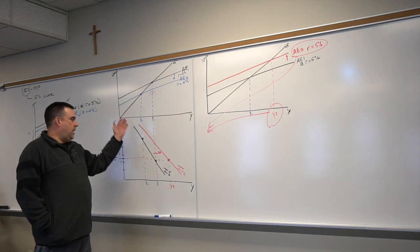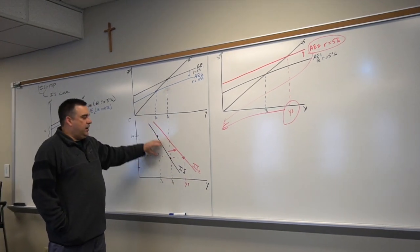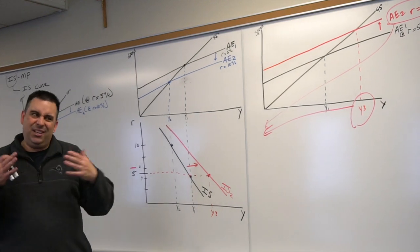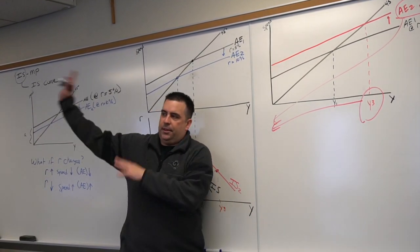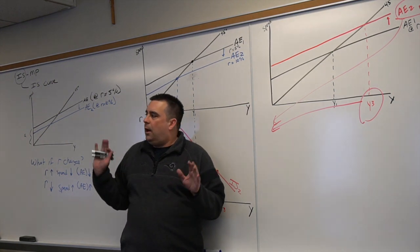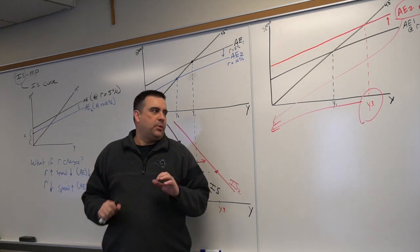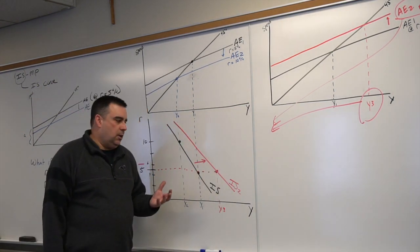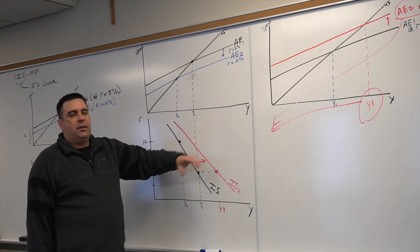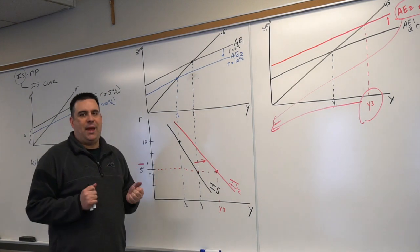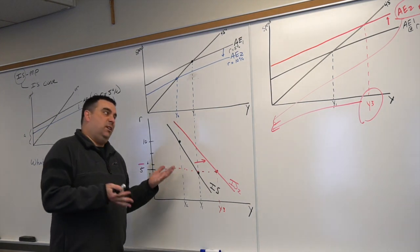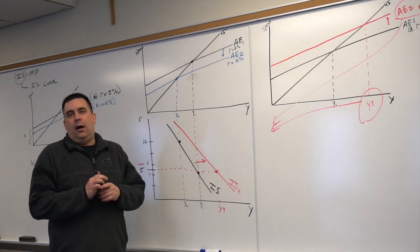If you remember when we did money demand, we told a very similar story. We had money and this need for spending, and we said it doesn't exactly represent money for spending, it represented that theory of liquidity preference. Almost the same interpretation here.